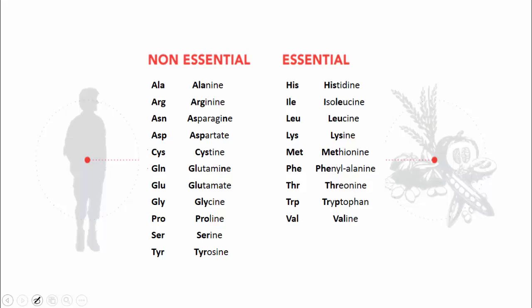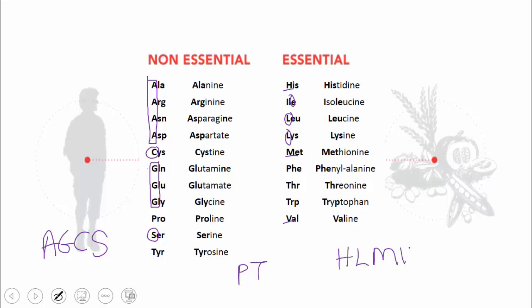Now I bet you're wondering, how is it possible to memorize these names in the first place? For me personally, I use a not very fancy way. As you can see here, under the non-essential, it all starts either with A, G, or C, or S, leaving only P and T letters in common between non-essential and essential. While on the essential side, the letters are H, L, M, and V. Those letters are not repeated on the other side. So only P and T is left out. How I remember it is that the shorter names, proline and tyrosine, are on the non-essential side, and the longer names, phenylalanine, threonine, and tryptophan, are under the essential.